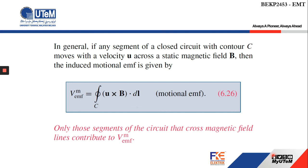If we want to generate current from the motional EMF so that current flows in the circuit, there needs to be a closed loop — that is why we have a closed integral. In general, if any segment of a closed circuit with contour C moves with velocity u across a static magnetic field, it induces a motional EMF. Only those segments that cross the magnetic field contribute to the motional EMF.